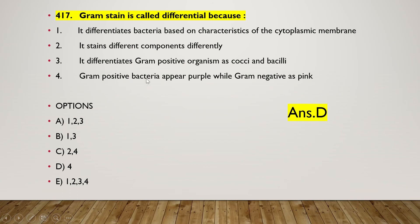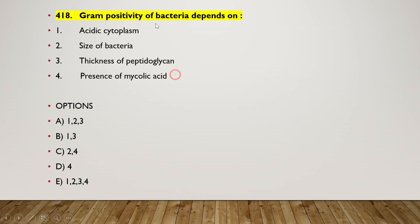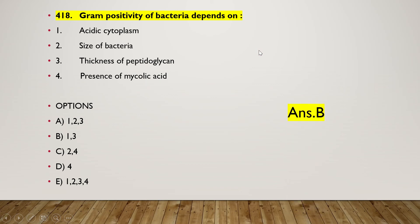Next question: Gram positivity of bacteria depends on — (1) acidic cytoplasm, (2) size of bacteria, (3) thickness of peptidoglycan, (4) presence of mycolic acid. The right answer is option B — one and three is the right answer.